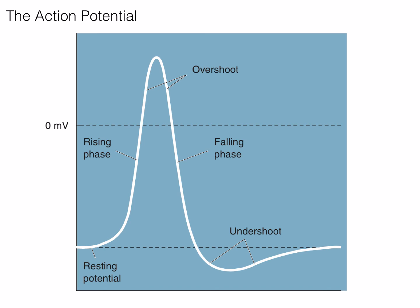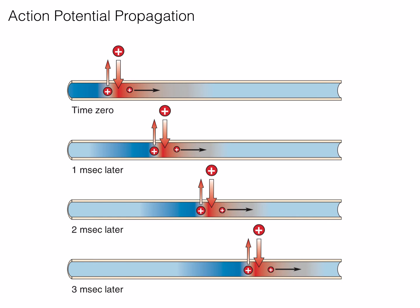Following an action potential, there is an absolute refractory period, in which no amount of stimulation will initiate an action potential. After the end of the absolute refractory period, a relative refractory period occurs. However, during this period, an elevated above-normal amount of stimulation can trigger an action potential. So how does the neuron ensure that the action potential is propagated in one direction? Through the absolute refractory period — by inactivating sodium channels, the depolarization wave only propagates in a forward direction.